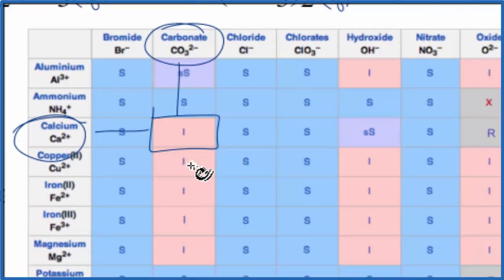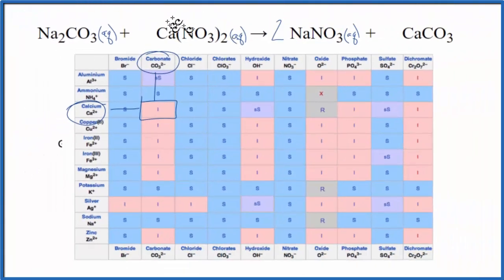That means it's not going to dissolve in water. When these two substances react, this will form a solid. It'll be a precipitate. It'll fall to the bottom of the test tube. We'll write an S for solid there.